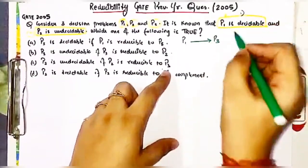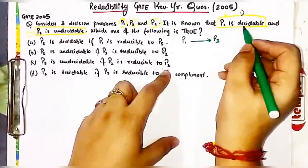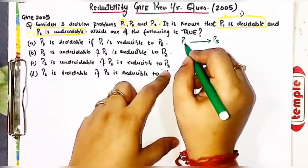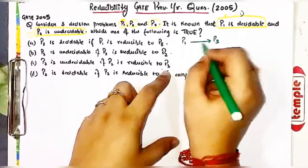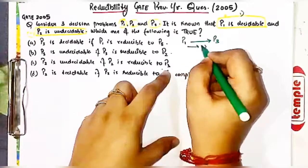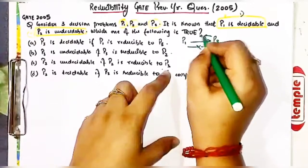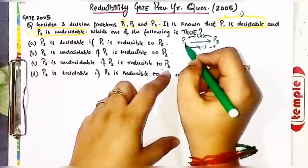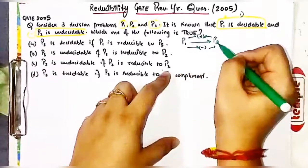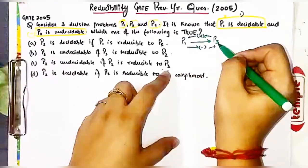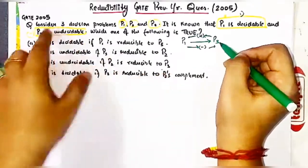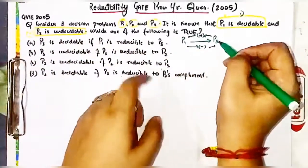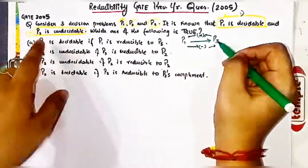As I told you in my previous video, this will pass negativity to P3 in terms of negativity and positivity. Decidable is a positive thing, hence if P1 is decidable, P3 can be decidable or undecidable. There is no relation of P2 in this reducibility, hence for P3 we cannot predict anything — option A is not necessarily correct.